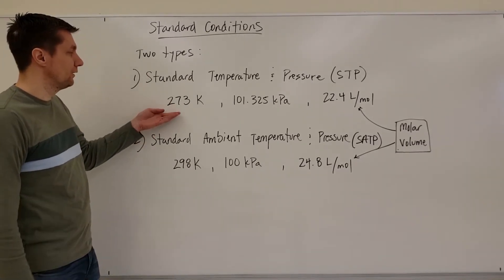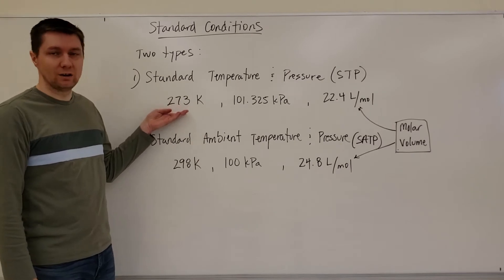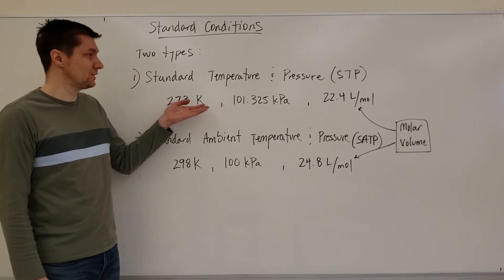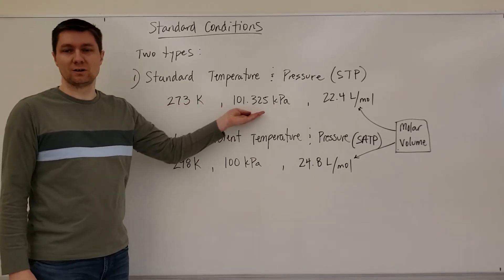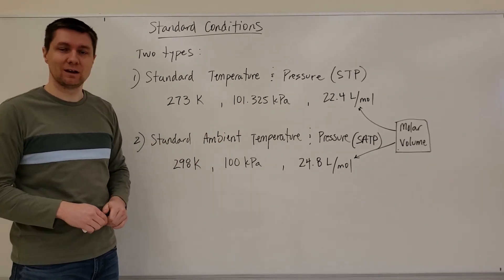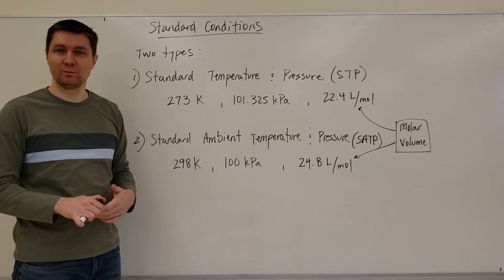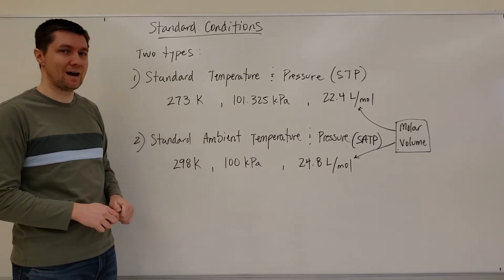These numbers here, this one is 273 Kelvin, this is zero degrees Celsius. And this is just the air pressure at sea level. And I'm sure at the time they probably thought that seemed pretty reasonable and good conditions to have.